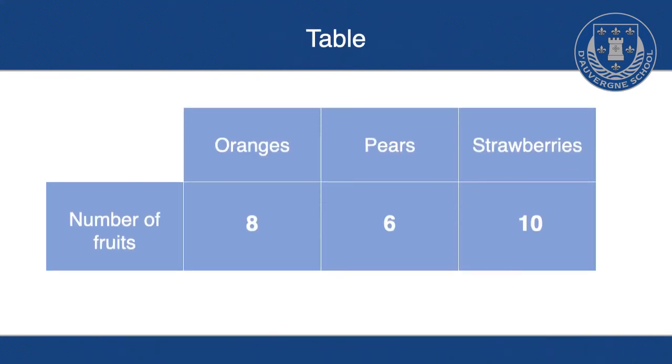We've got a table here. A table has the type of fruit at the top—it doesn't have to be that way, you could have the types of fruit down the left hand side or at the bottom. This table shows we've got eight oranges, six pears, and ten strawberries.